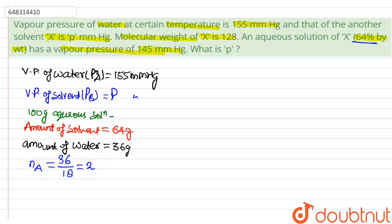The number of moles of water is 2. The number of moles of solvent is: weight 64g divided by molecular weight 128. So this is 0.5 moles.